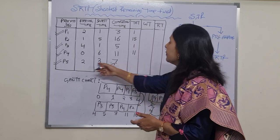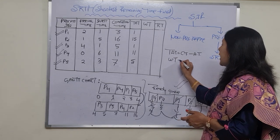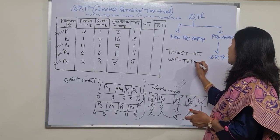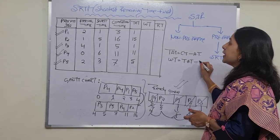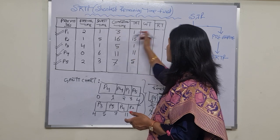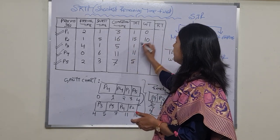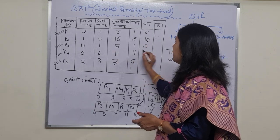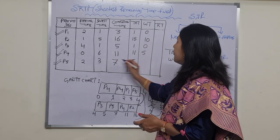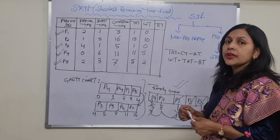The formula for waiting time is: Waiting Time = Turnaround Time − Burst Time. So: P1 = 1−1 = 0, P2 = 15−5 = 10, P3 = 1−1 = 0, P4 = 11−6 = 5, P5 = 5−3 = 2.